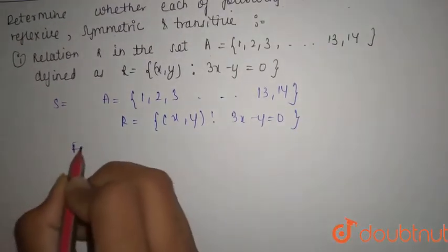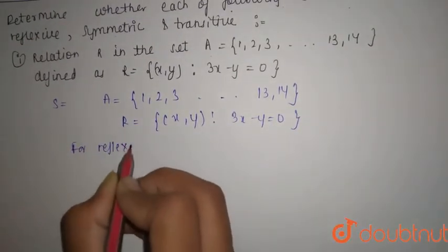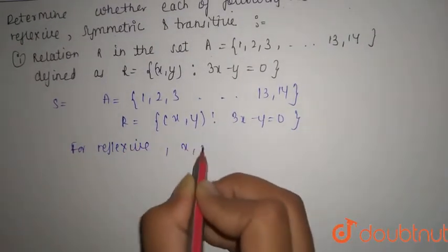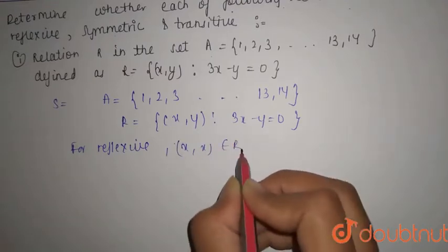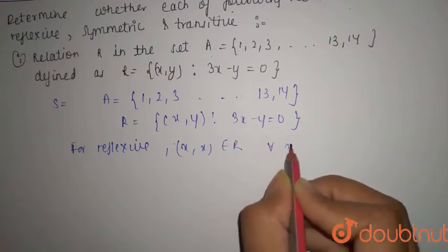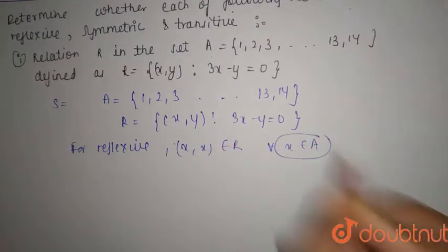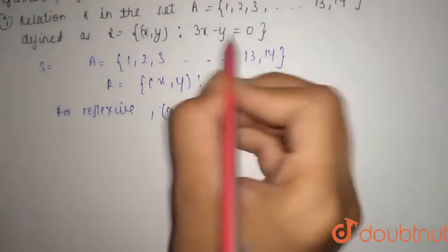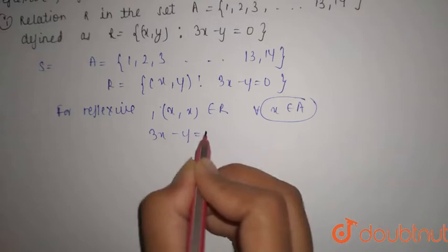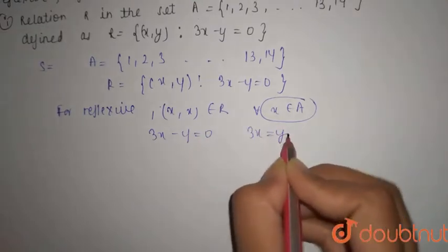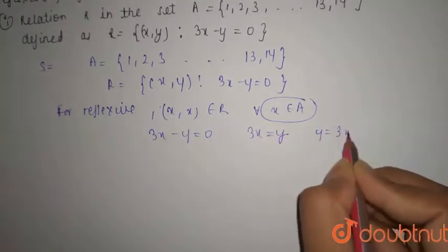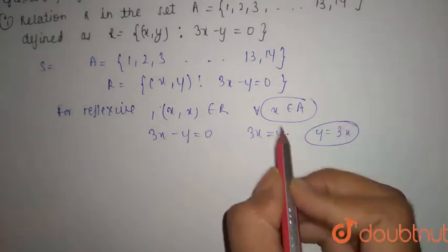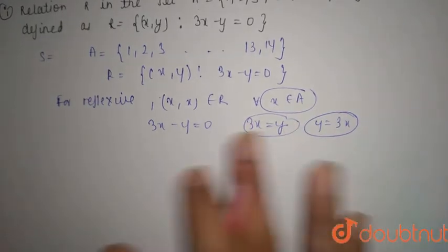For reflexive, you can say that x, x belongs to R where x belongs to A, that is the set. Now you know that 3x minus y equals 0, so you can say that 3x equals y or y equals 3x. That is 3x equals y.